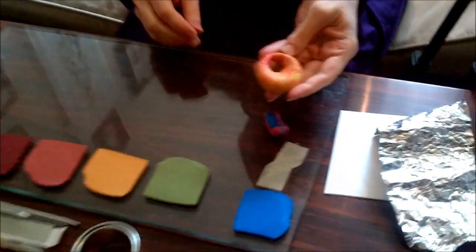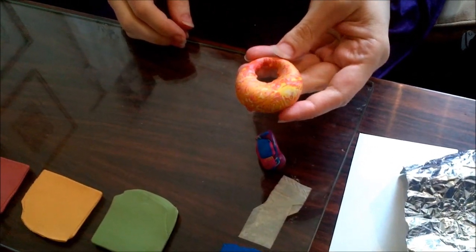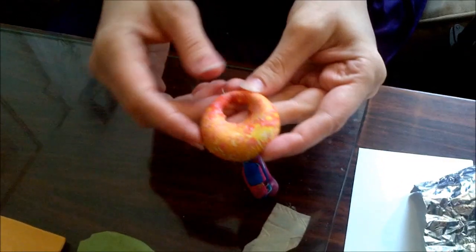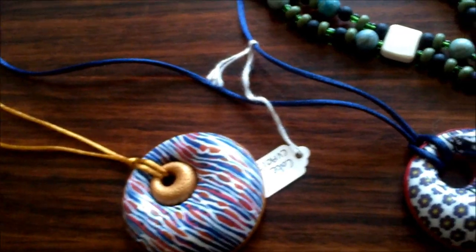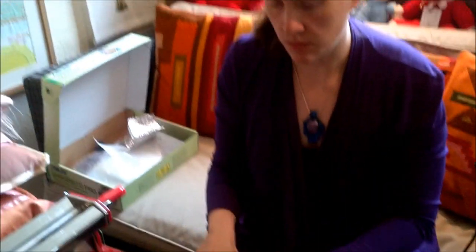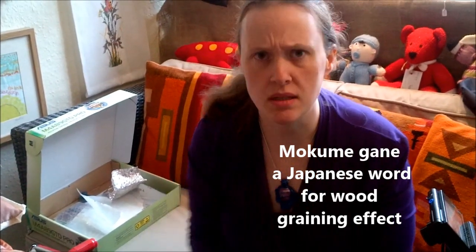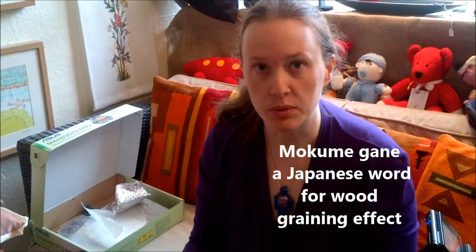I'm going to be making a hollow doughnut pendant using polymer clay. I'm going to do a Mokume Gane surface texture. You can see here some examples. You can do all sorts of different effects on the surface. Mokume Gane is a Japanese word. It means wood grain effect and it gives a nice sort of marbled crack.